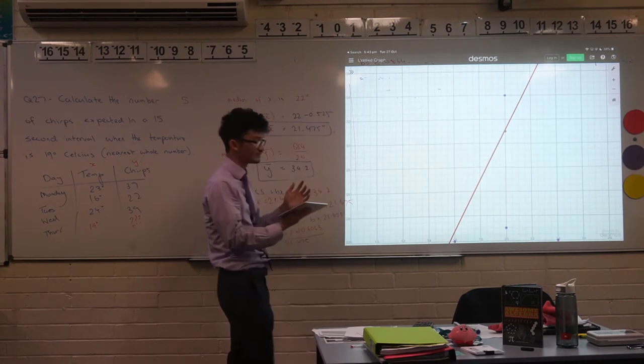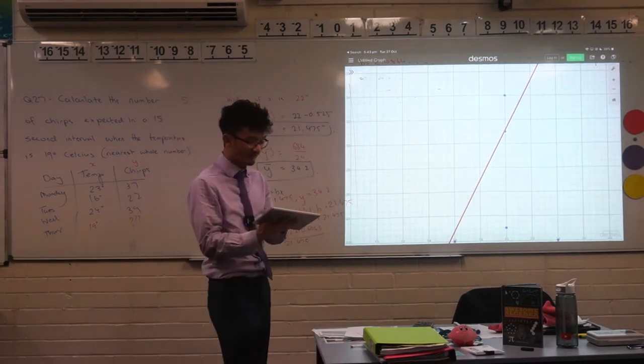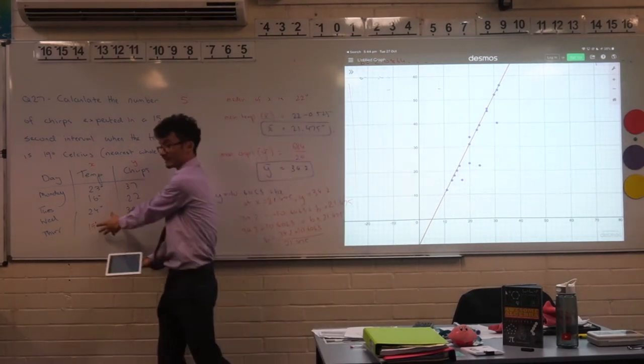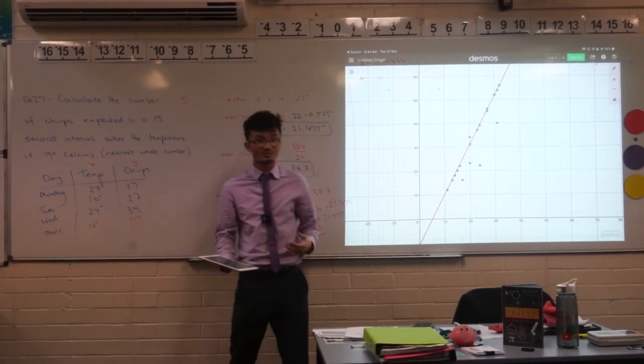That's the idea with this, that we can actually use this to predict within these values. Even though I don't have that value itself, if we were to get a temperature of 19 degrees, how many chirps can I expect there?